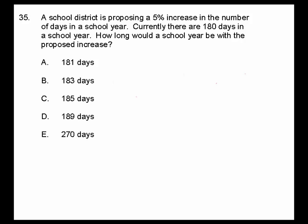What's happening here is there's a school district that would like to increase the number of days in a school year by 5%. There are currently 180 days in the school year. So if the school district increases the school year by 5%, what would be the new number of days? There are a number of ways to calculate this. The first way is a straightforward calculation where we find what 5% of 180 is and then add that to 180.